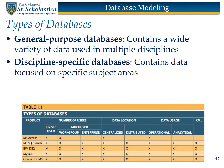In some contexts, such as research environments, a popular way of classifying databases is according to the type of data stored in them. Using this criterion, databases are grouped into two categories: general-purpose databases, which contain a wide variety of data used in multiple disciplines, and discipline-specific databases, which contain data focused on specific subject areas.